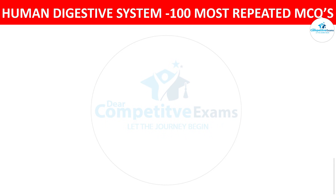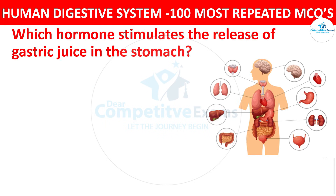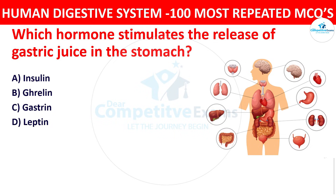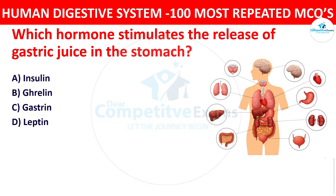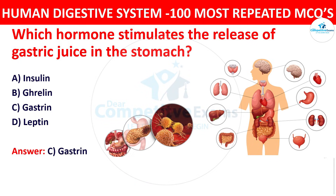Question number twenty-three: Which hormone stimulates the release of gastric juice in the stomach? Your options are insulin, ghrelin, gastrin, or leptin. The correct answer is gastrin. Gastrin stimulates the secretion of gastric juice, including hydrochloric acid and pepsin.